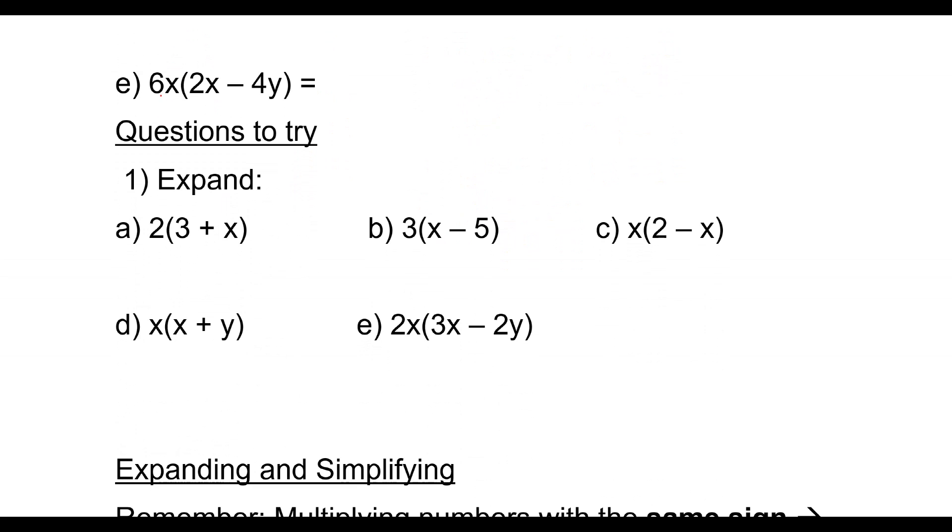In E, we have 6X times 2X, that's 12X squared, and then 6X times minus 4Y. A plus times a minus is a minus, so we have minus 24XY.